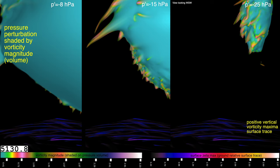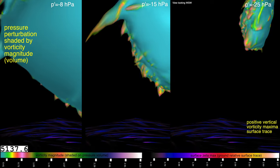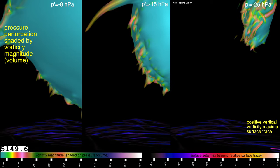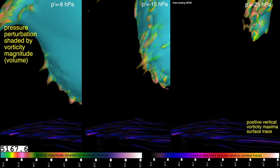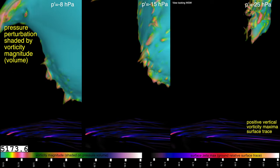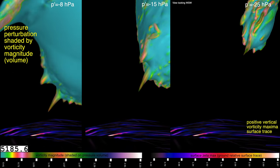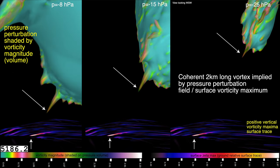Starting out with some more traditional analysis, I'm going to show pressure perturbation isosurfaces — three different values along with the vorticity magnitude at the surface. The little nubbies you see in the volume are ostensibly vortices, and I'm shading them by vorticity magnitude. At this point, we have a coherent two-kilometer-long vortex, certainly implied by drops in pressure at these three different heights and also spin-up at the surface. This is prior to tornado genesis.